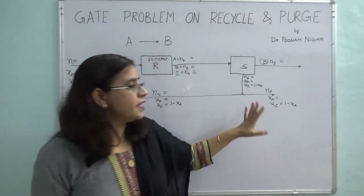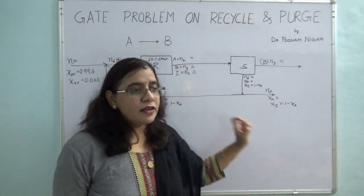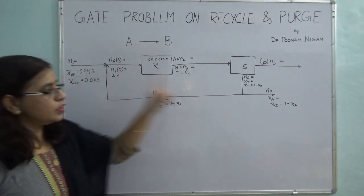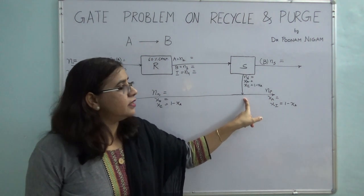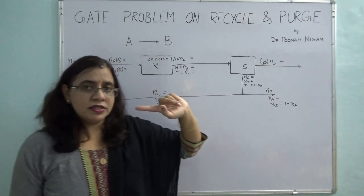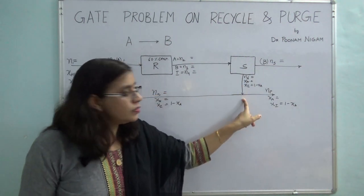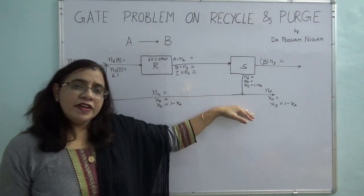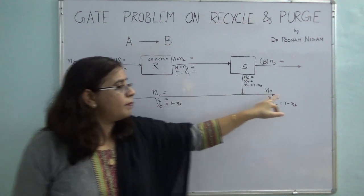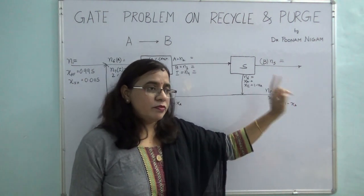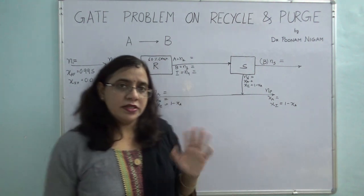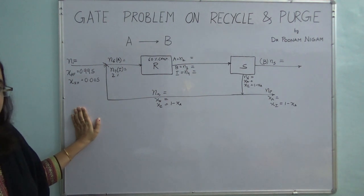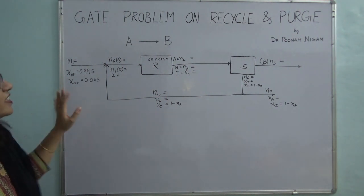I am going to take a purge problem. Whenever there is an inert which doesn't take part in the reaction, there is a chance that the inert doesn't leave with the product stream and it tends to accumulate in the recycle loop. So in order to prevent the build up of the inerts, you have to draw a purge stream. I have taken this problem from the 1990 GATE exam — it is a very interesting problem.